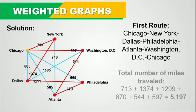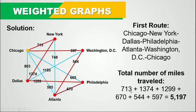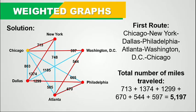Now let's find the total number of miles traveled by adding the corresponding weights of each edge. Chicago to New York: 713. New York to Dallas: 1374. Dallas to Philadelphia: 1299. Philadelphia to Atlanta: 670. Atlanta to Washington DC: 544. Washington DC to Chicago: 597. Adding these gives a total of 5197 miles for Road 1.